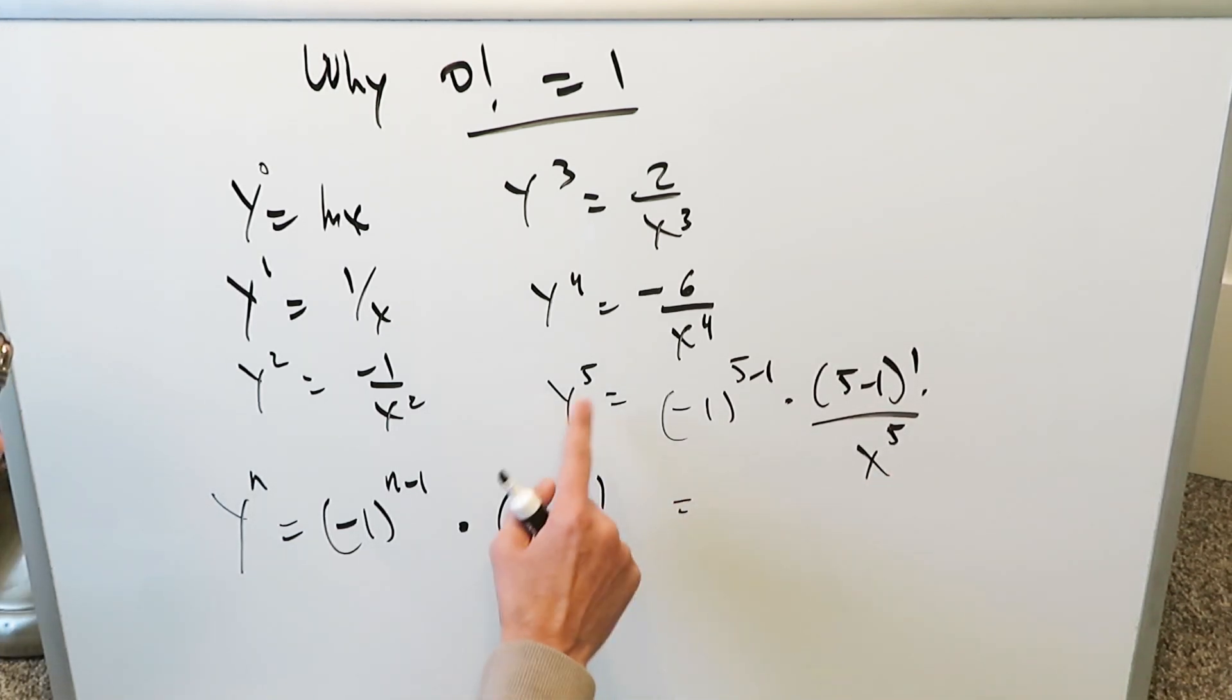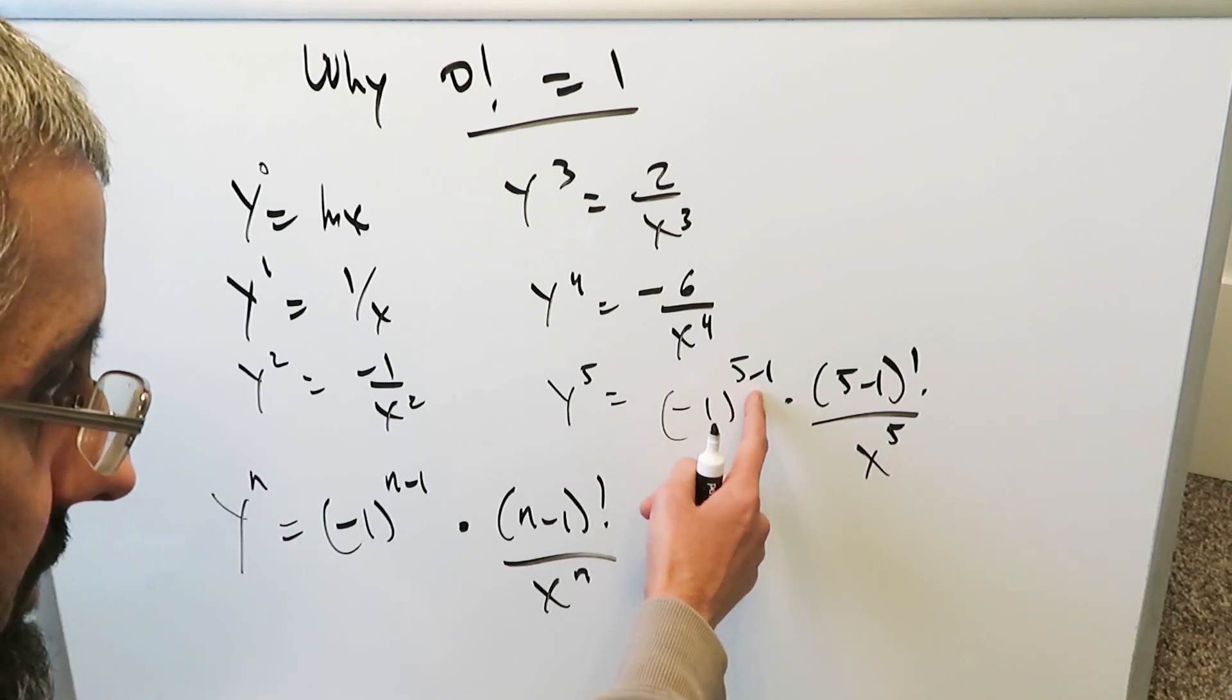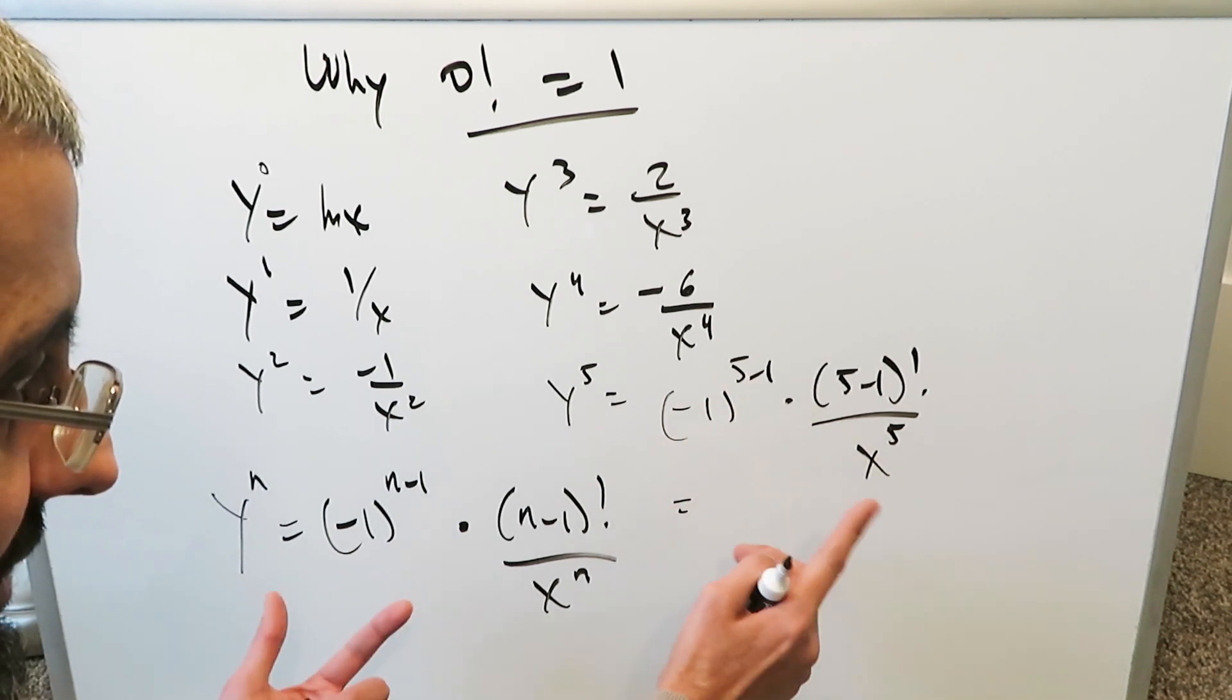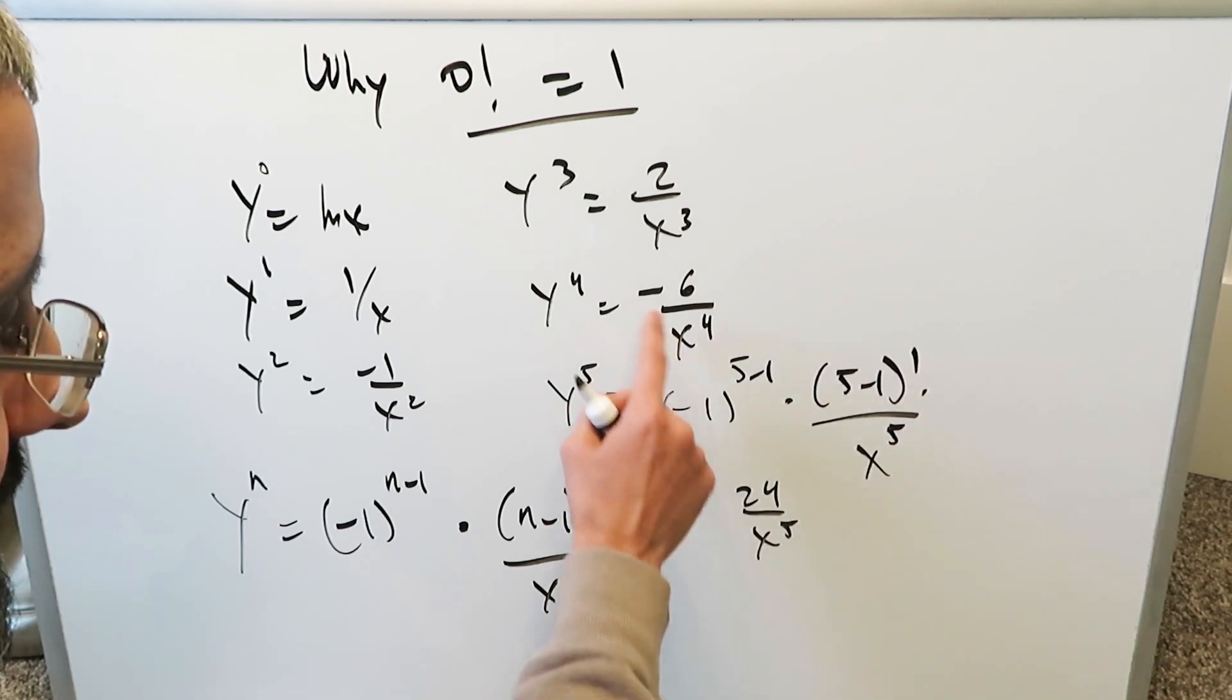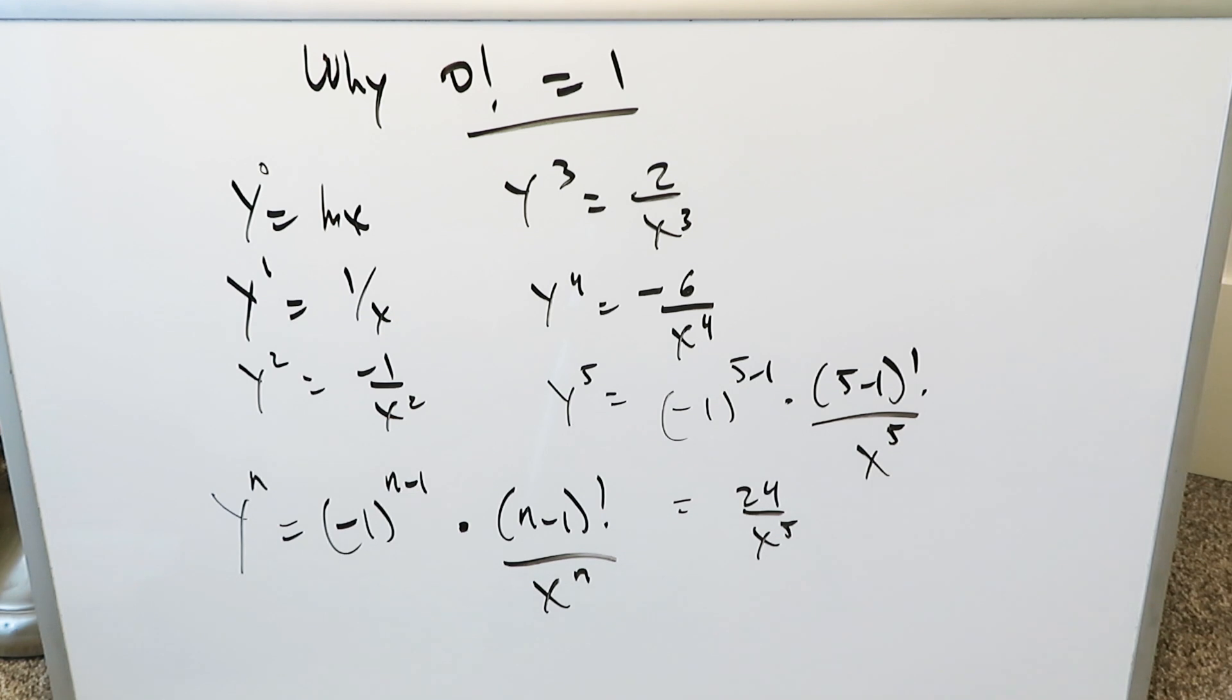Because here, n is equal to 5, you're doing the 5th order derivative, minus 1 to the power of 4, which is an even number is a positive one. Here, you'll have a 4 factorial, which is 24 over x to the 5. So that would be the next step, the next order derivative.